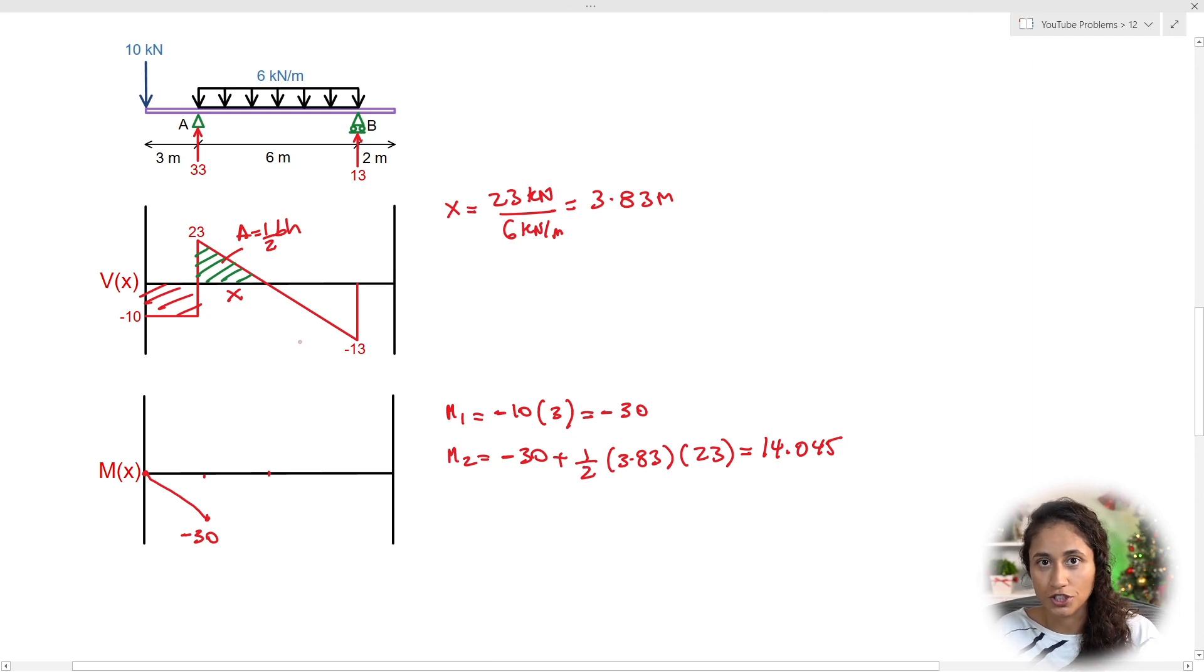Now let's draw M2. So when we have a linear force here, for moments that's going to be second degree or parabola. And at this point here, we found that M2 is 14.045, right? So we're going to have something that looks like this. So this is more like a parabola shape. And the last thing we're going to do here is find the moment M3. So we're going to have 14. So make sure that you guys always add the previous moment.